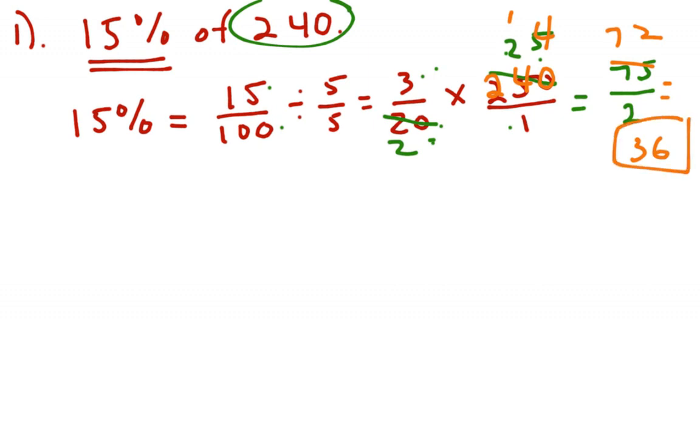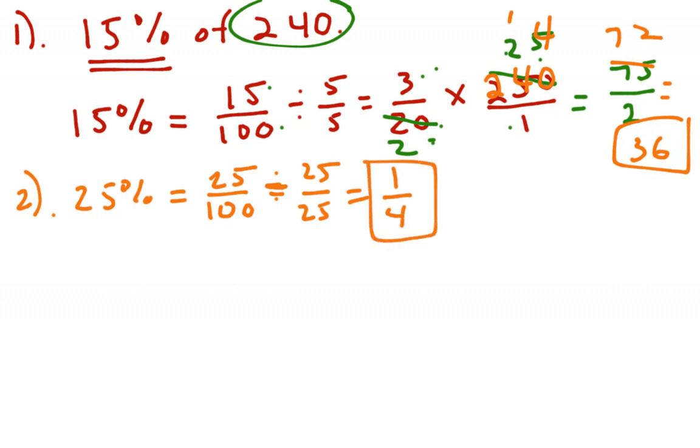Second example problem. Example problem 2, 25%, which is 25 over 100. I'm not going to do the division, because that was the decimals in the last lesson. I am going to simplify, so I can divide by 25 over 25, gives me 1 over 4, done with that one.